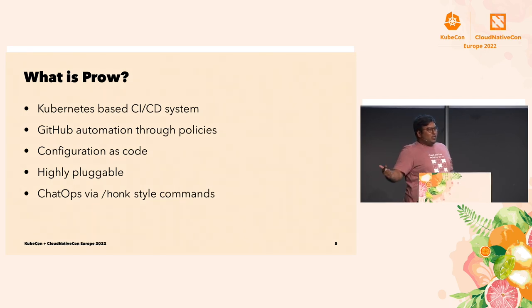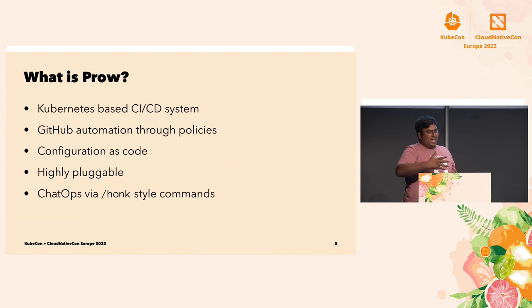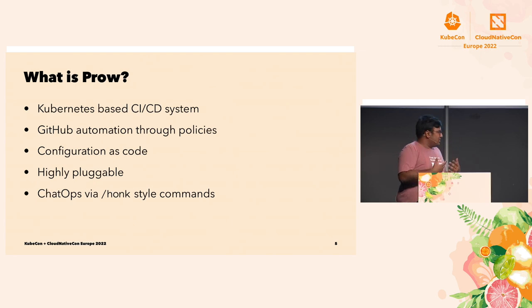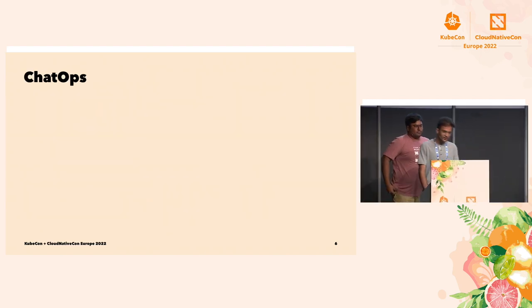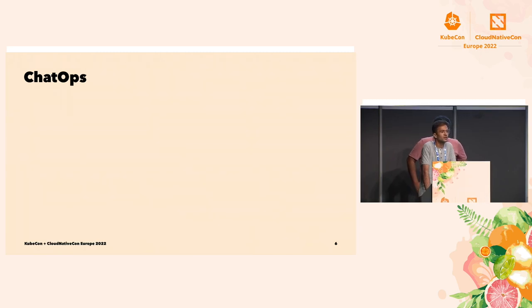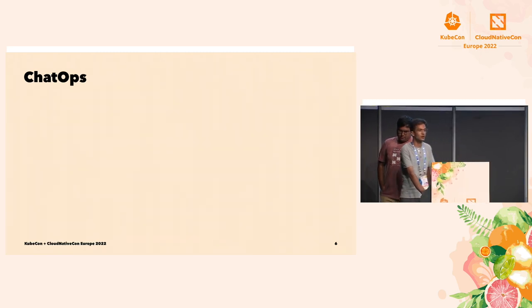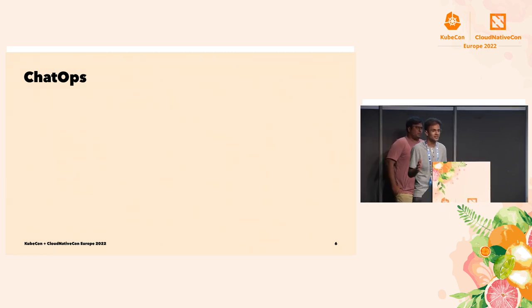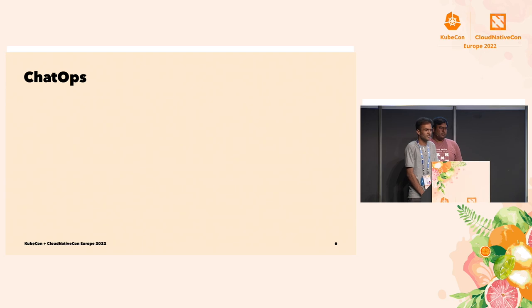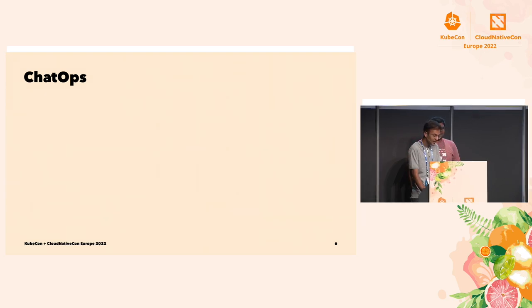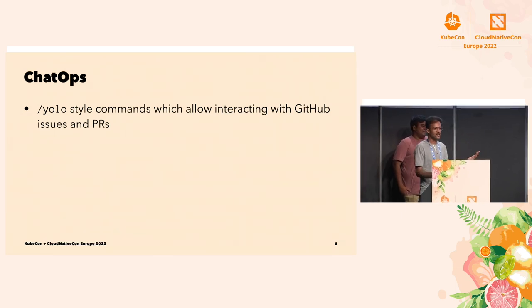Prow also includes something called chat ops. How we do it is through slash commands — like slash honk, which will essentially give you an image of a duck doing some naughty things. Chat ops is probably my favorite bit about Prow because when I was starting out as a contributor to Kubernetes, you look at all these PRs and experienced maintainers talking in languages you don't understand — and Prow is the one simple thing showing you images of cats and dogs.